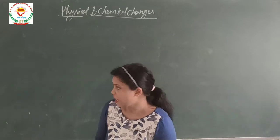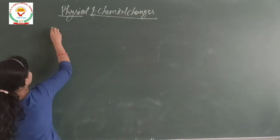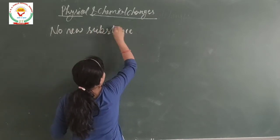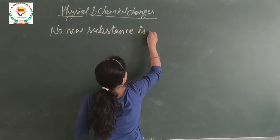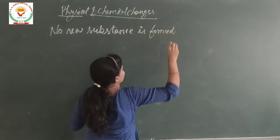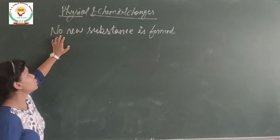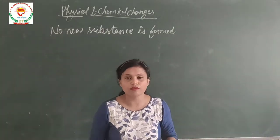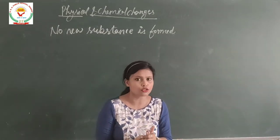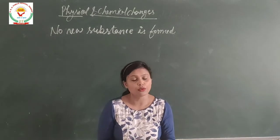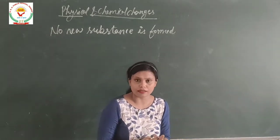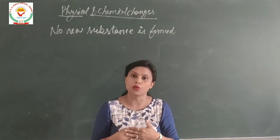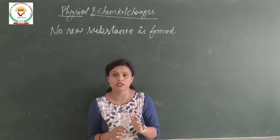Physical changes are those changes in which only the physical state of the object changes, or we can say no new substance is formed. For example, when we fold a paper, it does not convert into polythene or any other plastic — it remains the same paper. Only the size has changed due to the folds. So this is a physical change.